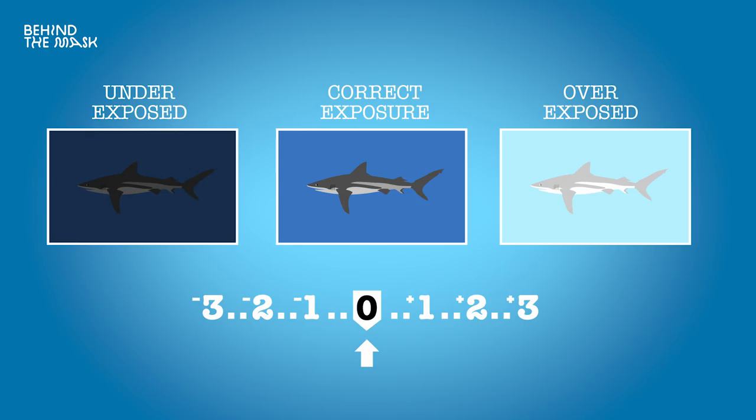There are going to be situations where you set your shutter speed and aperture to what you want them to be and then you'll be under or overexposed — and that's where ISO comes into play. You can check the exposure of your image on the LCD screen or in the viewfinder. There's a little electronic light meter that usually goes from minus three to zero to plus three, and you want your exposure set right in the middle at zero.